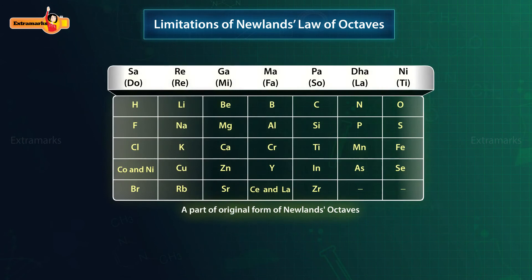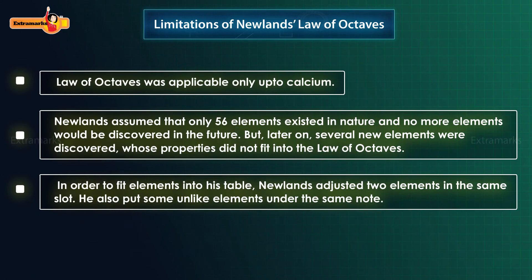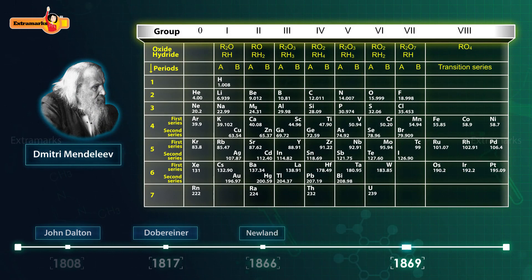On the other hand, Iron, which resembles Cobalt and Nickel in properties, has been placed far away from these elements. For these reasons, Newland's classification was not accepted by other scientists, but its important contribution in the process of classification of elements helped other chemists. Three years later, in 1869, Dmitri Ivanovich Mendeleev again worked on the classification of elements, inspired by the ideas of Newland, taking atomic mass as the basis of classification.